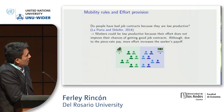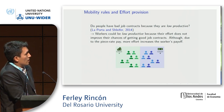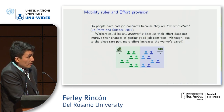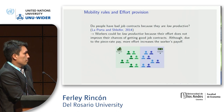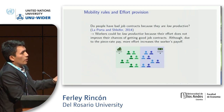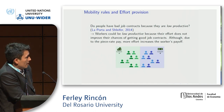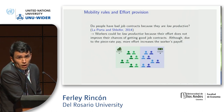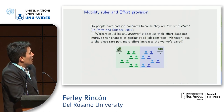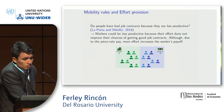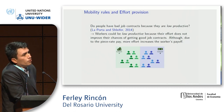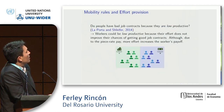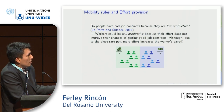Imagine a dual labor market where the only work is the same between sectors, and the unique difference is the piece rate in both sectors. We call these sectors contract A and contract B, and the difference is that the piece rate in contract A is twice contract B's piece rate. We found that workers could be low-productive because their effort does not improve their chances of getting good jobs, although the piece rate implies that more effort increases the worker's payoff.